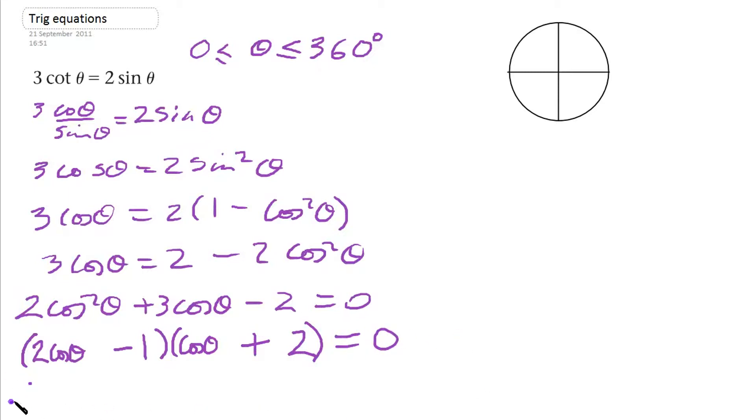So therefore, either 2 cos theta equals 1, that makes all of this bracket 0, or cos theta equals minus 2. Well this has no solutions. So there's no solutions to cos theta equals minus 2.